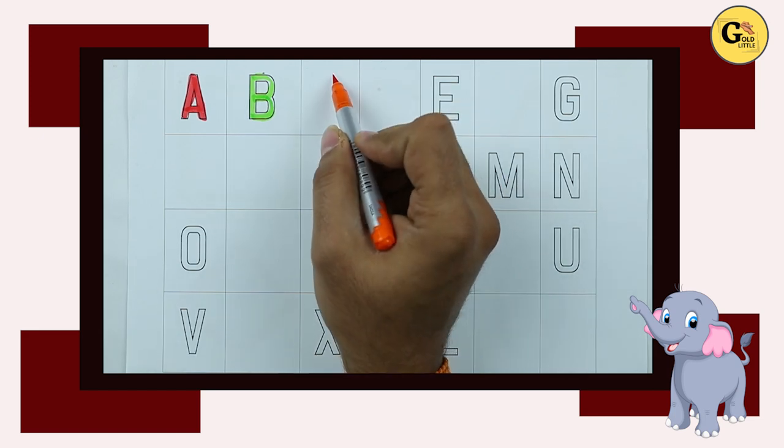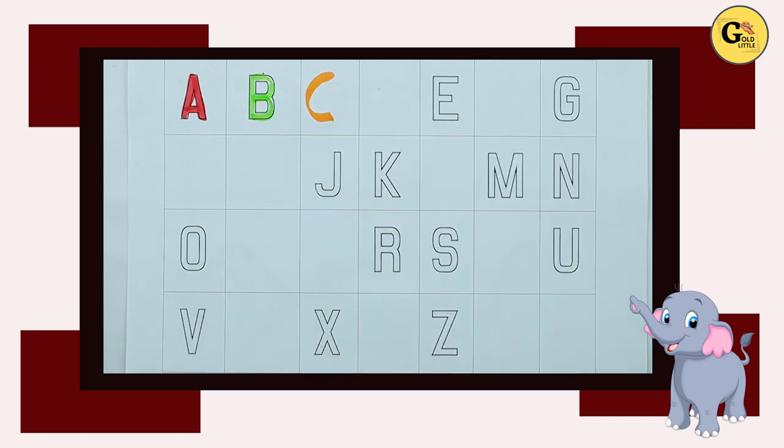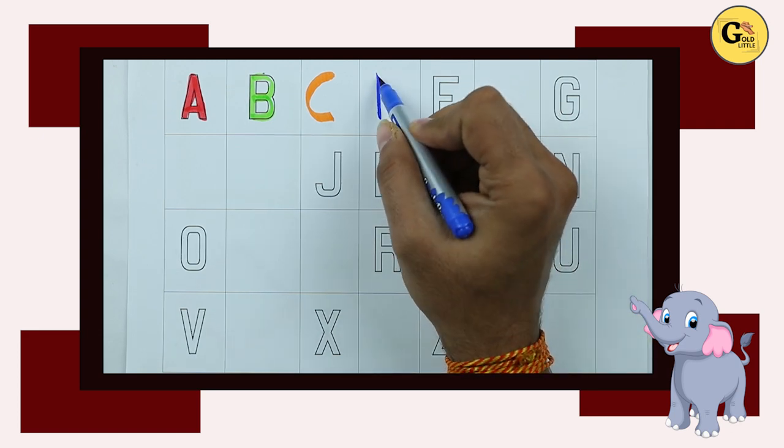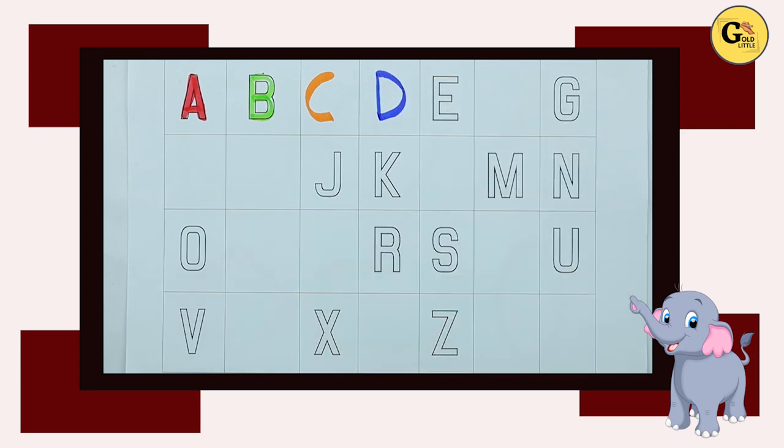C. What's next? C. C with orange color. C for cat. What next? Tell me, tell me. Yes, right. D. D for dog with blue color.